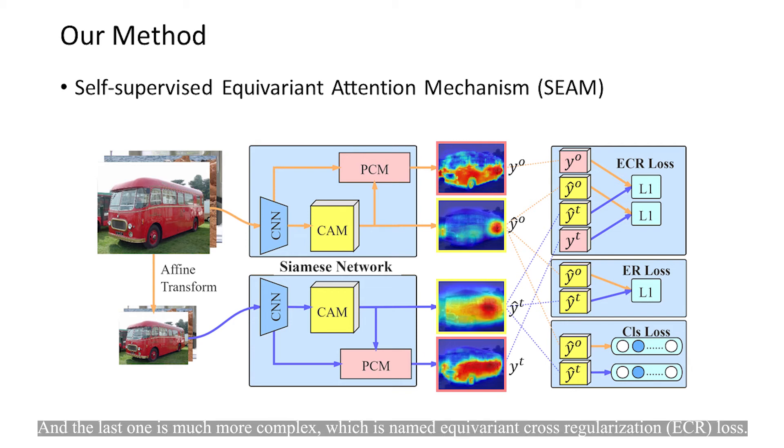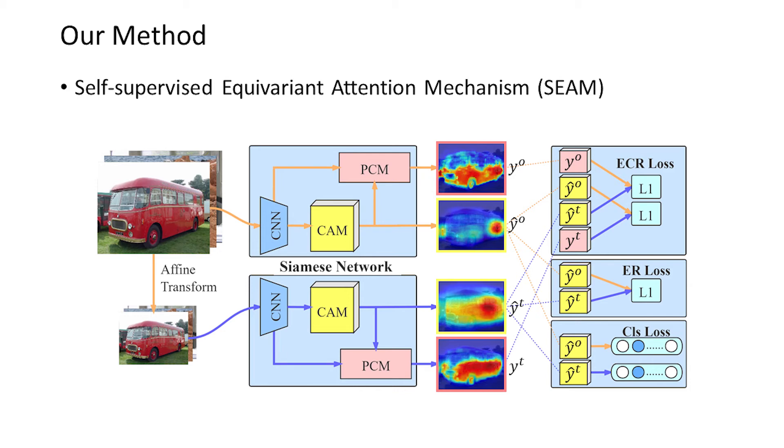And the last one is much more complex, which is named equivariant cross-regularization loss. It regulates the output of PCM and the original CAM from the other branch.